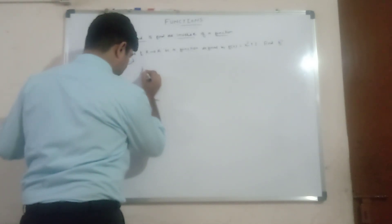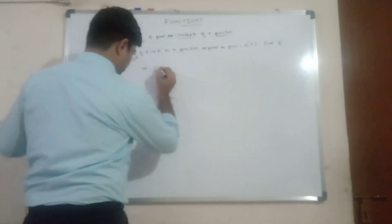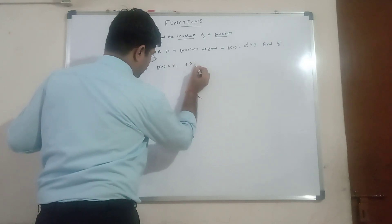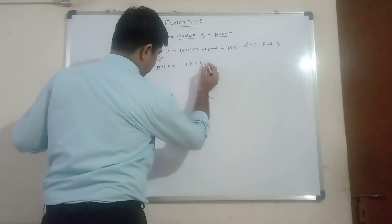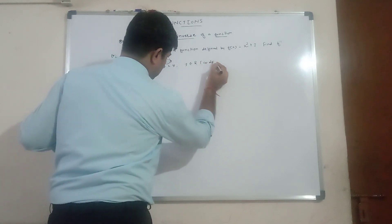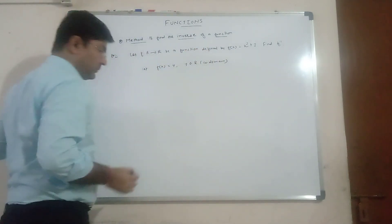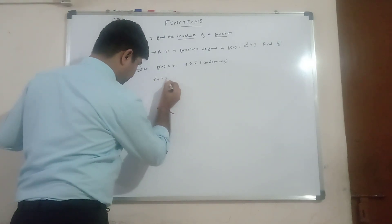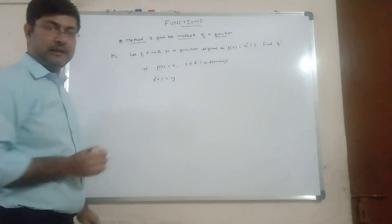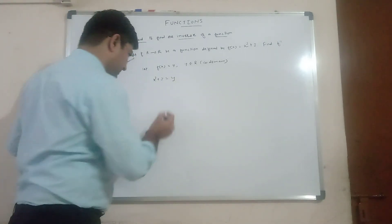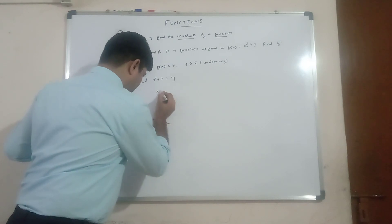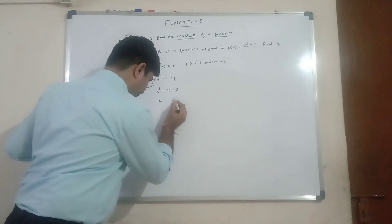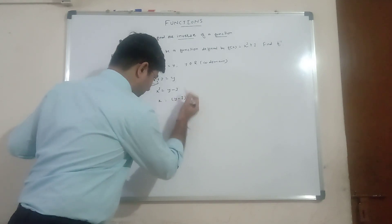Step 1: let f(x) = y, for y belongs to R, that is the co-domain. So x³ + 3 = y. Step 2: make x the subject. Therefore x³ = y − 3, and therefore x = (y − 3)^(1/3).